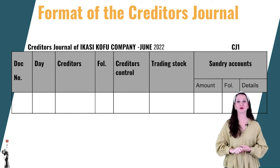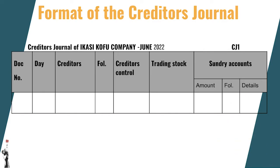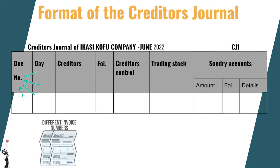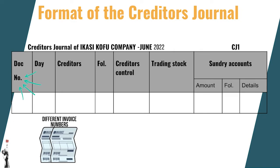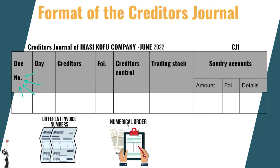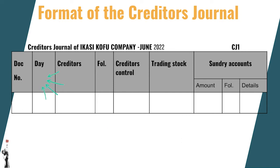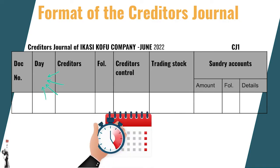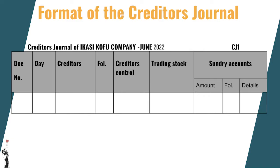Now I will go through every column specifically. The first column is the document number. We have to renumber the invoice numbers because they came from different creditors. The invoices are renumbered in sequence by the business before they are recorded in the creditor's journal, and then filed according to the new numerical order. The source document is the original invoice. The second column is the day, used to write the day on which the transaction took place — the date on the invoice when items were bought on credit.